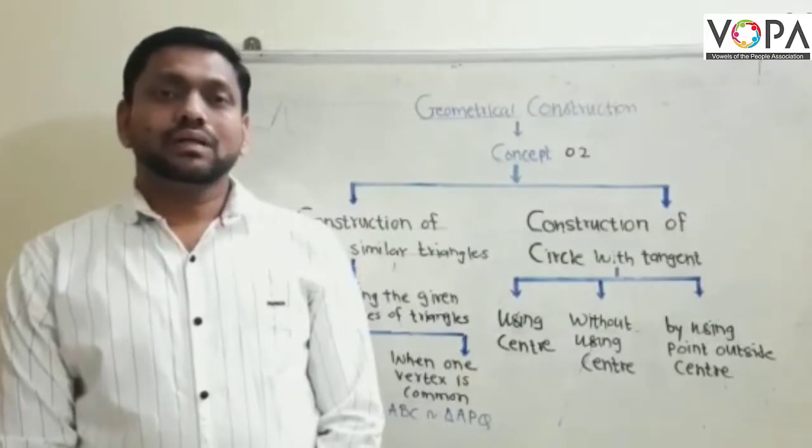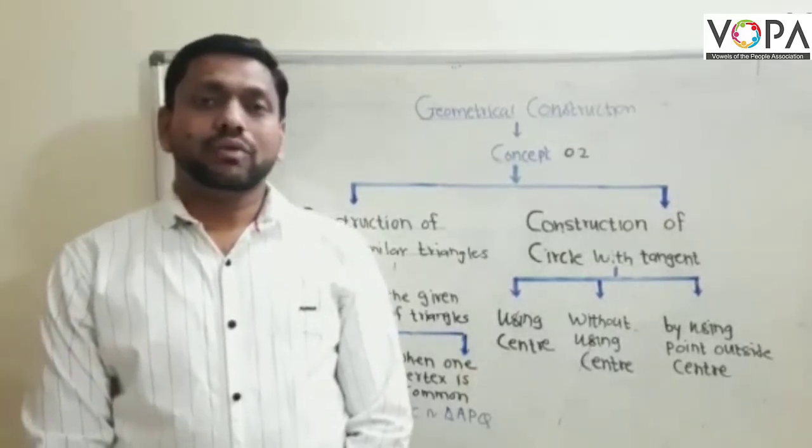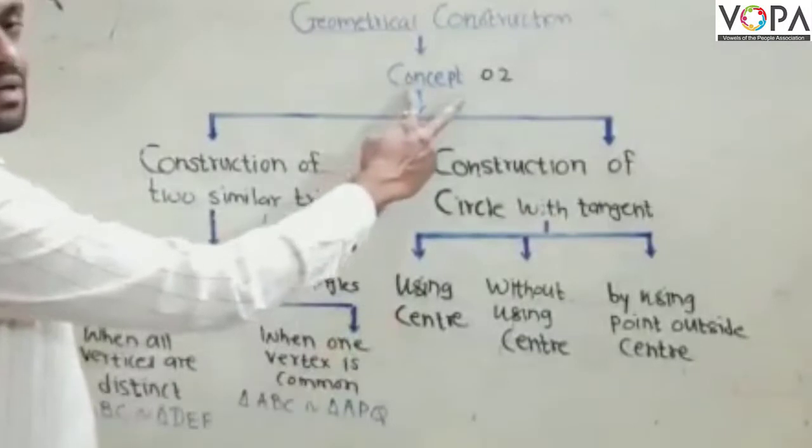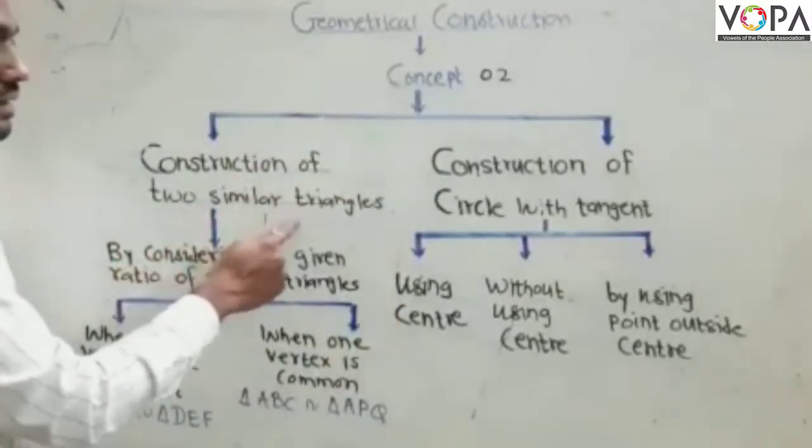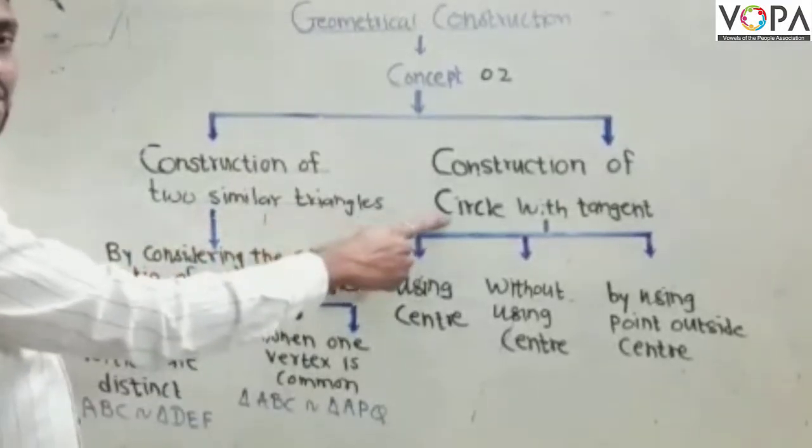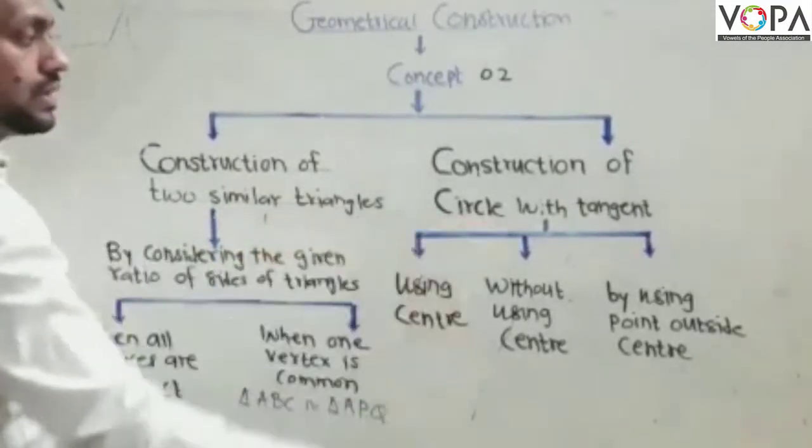Now in this new concept of geometrical construction, we introduced two different concepts. The first concept is related to similar triangle and second concept is related to circle with tangent.